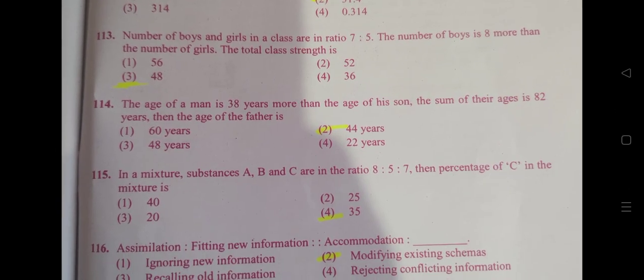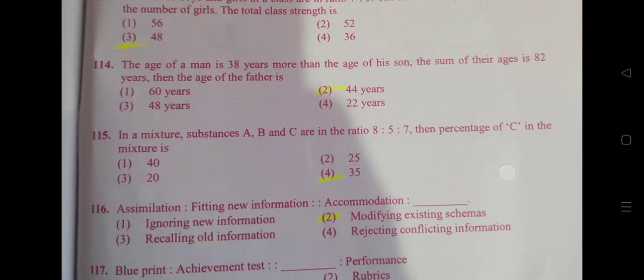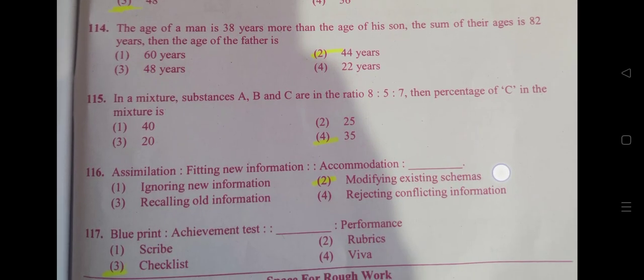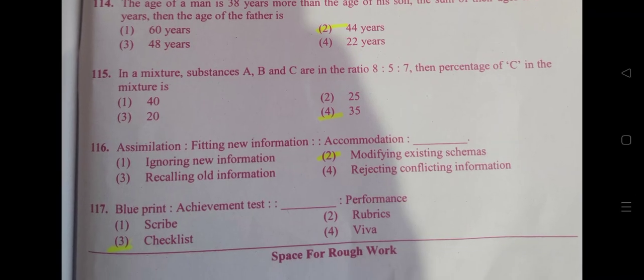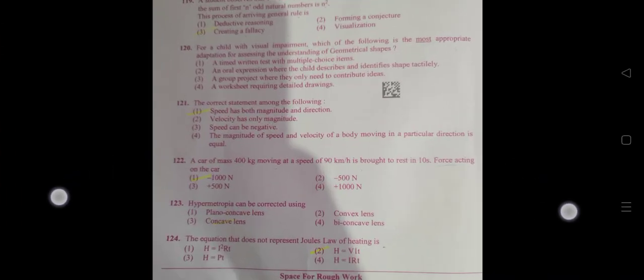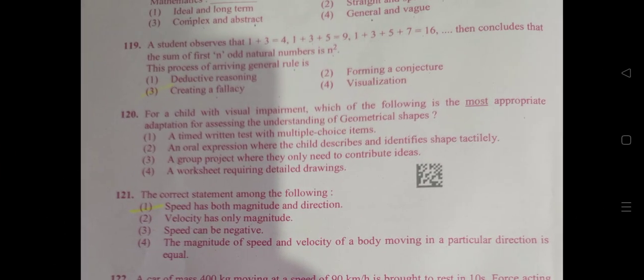Question number 115 is 35 years. Question number 116 is modifying existing schemes. Question number 117 is checklist. Question number 119 is creating an LSE.